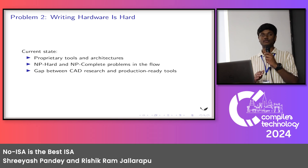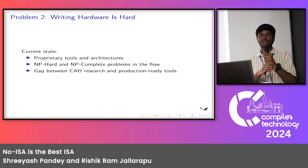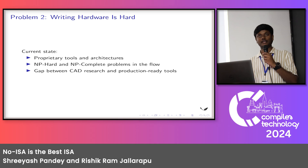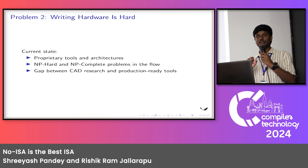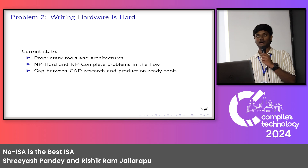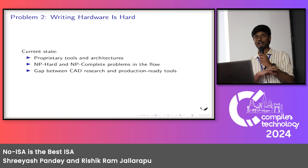Another problem is the flow when trying to go from algorithm level to hardware level. There are a series of steps happening that involve NP-hard and NP-completeness problems in between — that is one of the things happening in the CAD flow from application to hardware level. There is also a huge gap between industry-standard CAD tools and the research happening in present academia and industry. To understand all these problems, let's look at the CAD tool flow and how it happens in the present ecosystem.